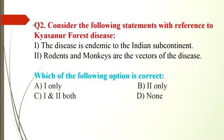Question number 2 is with reference to Kyasanur Forest Disease. Statement 1: the disease is endemic to the Indian subcontinent. Statement 2: rodents and monkeys are vectors of the disease. Statement 1 is incorrect and statement 2 is correct. So the answer is option B, statement 2 only.